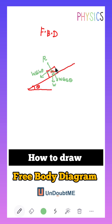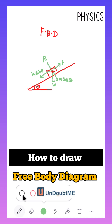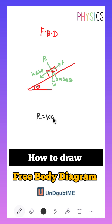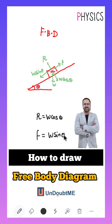Since the body has a tendency to move forward, that is downwards, the force of friction will act in the backward direction. These are the forces which will act on this body. If we want to write equations for force balancing, then it will be R equal to W cos theta and F equal to W sin theta.